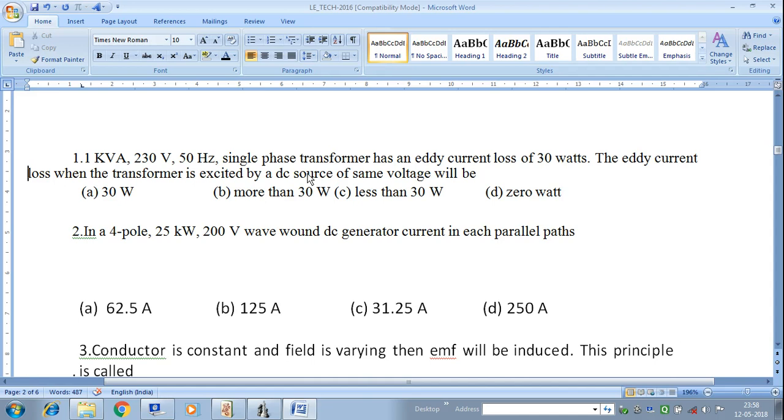Therefore, as we are supplying DC, there is no change in current. Therefore, the voltage or back EMF developed, that is L di/dt, as here i is constant, the derivative of a constant is equal to zero. So no back EMF will be developed.